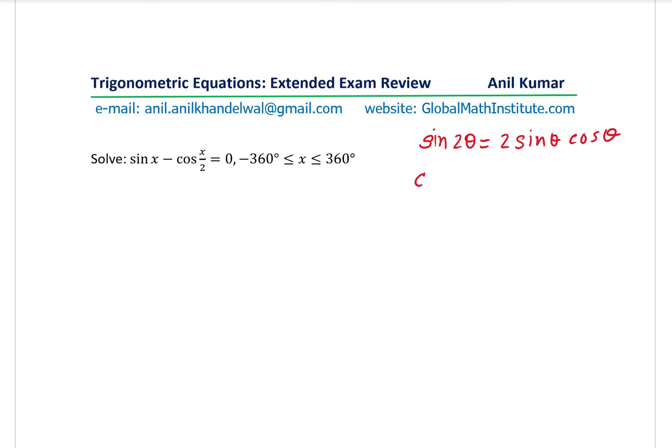We also have a formula for cos 2 theta, which could be written as cos square theta minus sin square theta, or could be written as 2 cos square theta minus 1, or 1 minus 2 sin square theta.